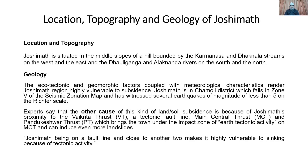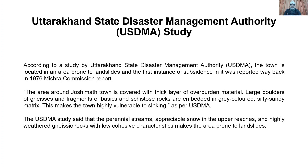Joshimat falls in seismic zone 5 of the seismic zonation map of India and has witnessed several earthquakes of magnitude less than 5 on the Richter scale. Experts say another cause of this land subsidence is Joshimat's proximity to the Vaikrita Thrust, the Main Central Thrust (MCT), and the Pandukeshwar Thrust — tectonic fault lines that bring the town under the impact zone of great tectonic activity and can induce further landslides in the future. Being on a fault line and close to two others makes Joshimat highly vulnerable to sinking.